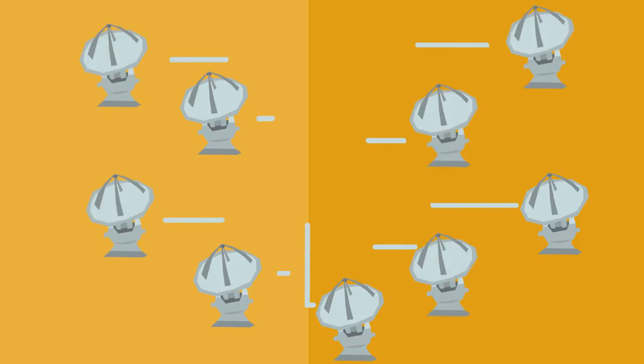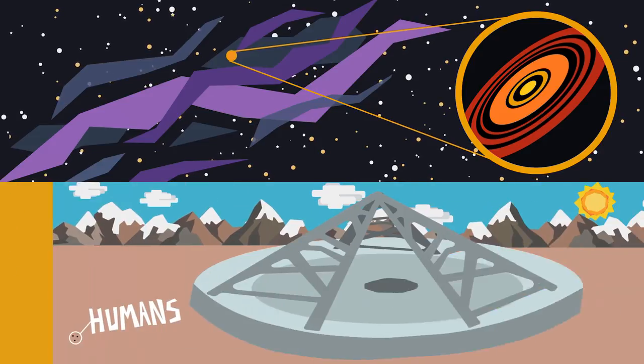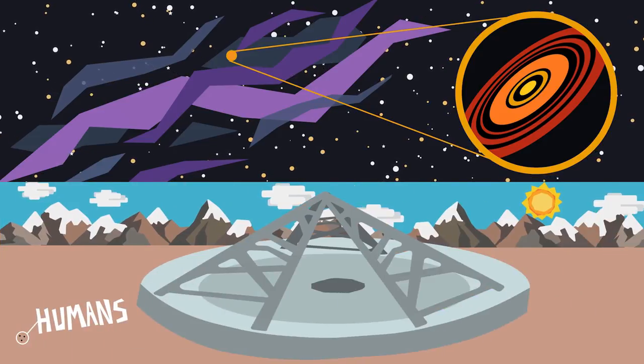By using several different small telescopes as one, they could see extremely fine details of the universe, just like if they were using a single telescope several kilometers across. They called this technique interferometry.